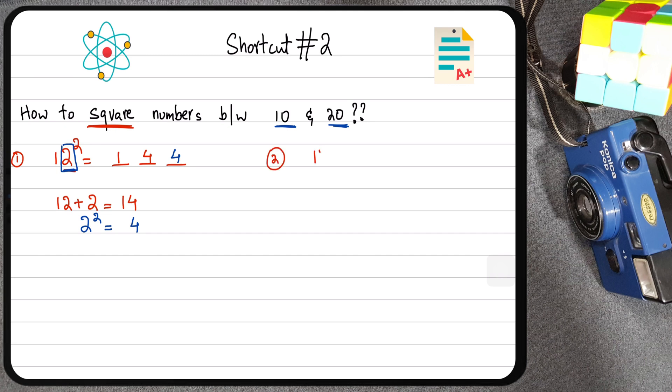Let's say you want to square 13. You want to find out what the square of 13 is. Again, make three blanks. Now, for the first two digits, I'm going to take 13 and add 3. So 13 plus 3 is equal to 16. So I have my first two digits sorted out, 16.